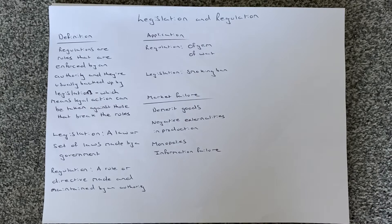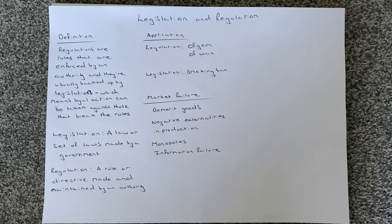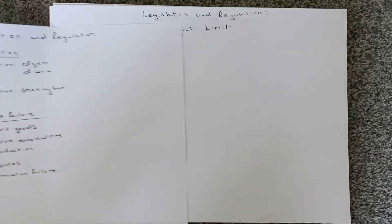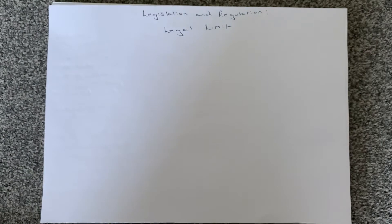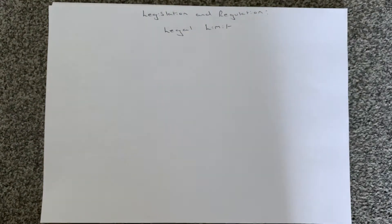It can also be used for monopolies, making sure monopolies do not exploit consumers — in the sense of preventing firms from charging too high a price. And it also helps to correct the market failure of information failure. It could be regulation that firms must provide consumers with all the necessary information so they can make an informed judgment, and by doing so that should hopefully correct the market failure. That's a brief overview of legislation and regulation, and now we're going to look at a particular type of regulation — a legal limit.